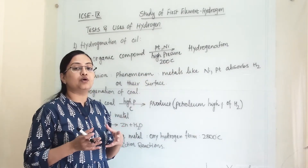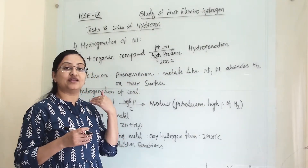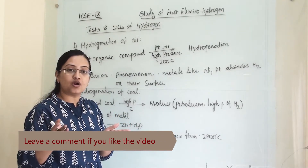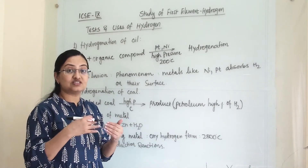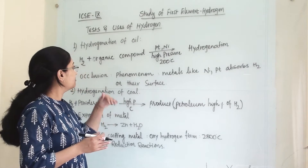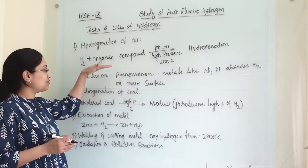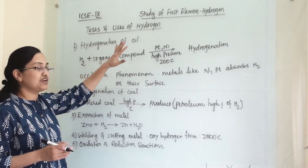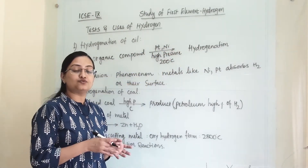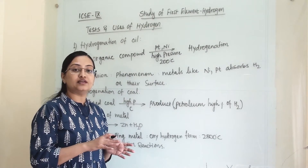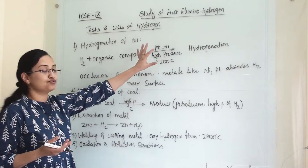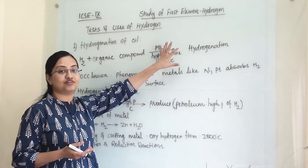Organic compounds may have double bonds and triple bonds. When we add hydrogen, double bonds convert to single bonds and triple bonds convert to double bonds. We will study this in standard 10 organic chemistry, but for now remember that we perform hydrogenation of organic compounds. By this process, we convert palm oil into a semi-solid state or fat, so hydrogenation is important for vegetable oil.